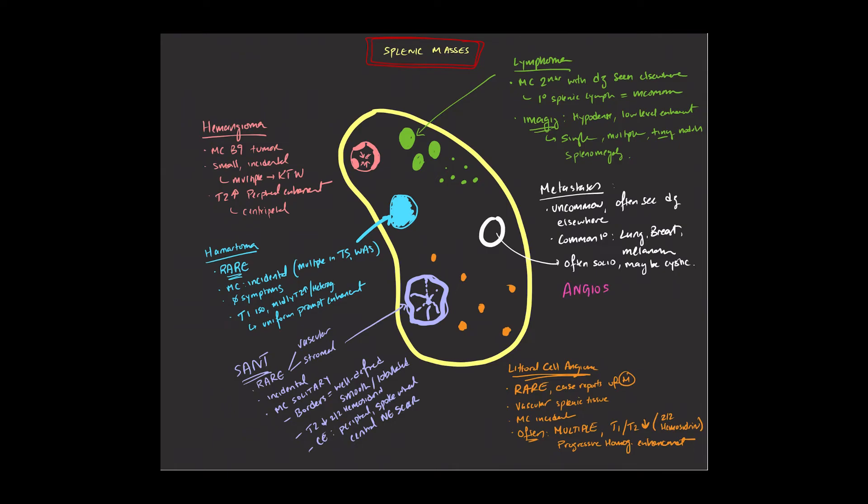Now, angiosarcoma is a very, very rare lesion. It can occur in the spleen as a primary malignancy. And unfortunately, poor prognosis in these patients, often when it's seen, there's widespread disease elsewhere in the body.